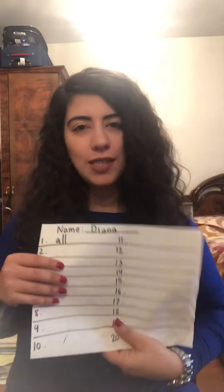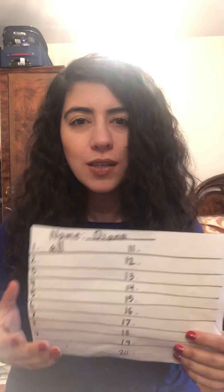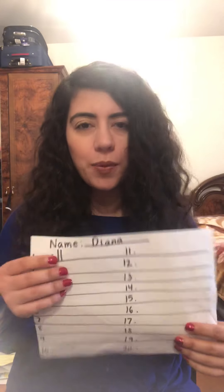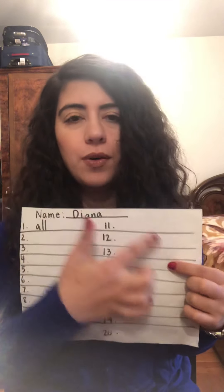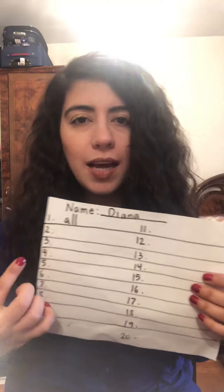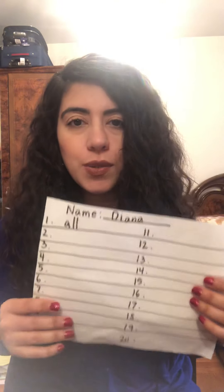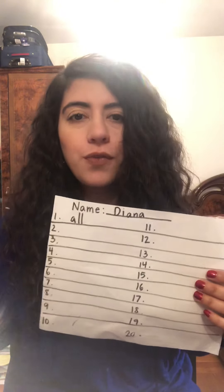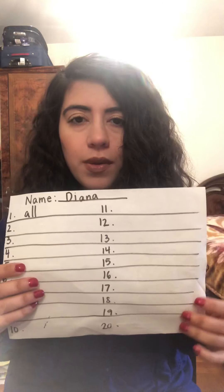So first thing I want you guys to do is to get a piece of paper for yourself. And if you need help, definitely have your parents or whoever's with you help you out. Now, if you don't have the paper that has the dotted lines that we use in class, it's preferred to use that paper, but if you don't have it, it's okay. You could just use a regular paper without the lines.